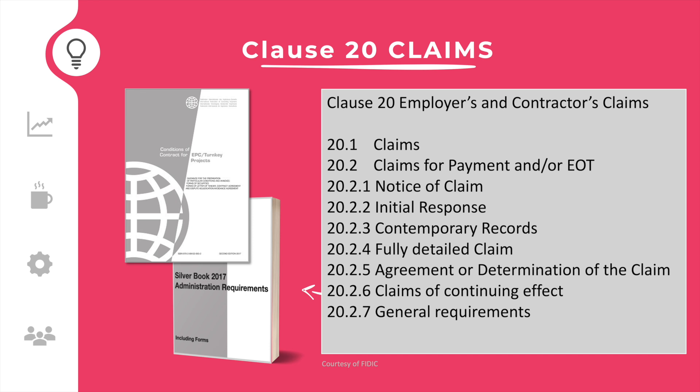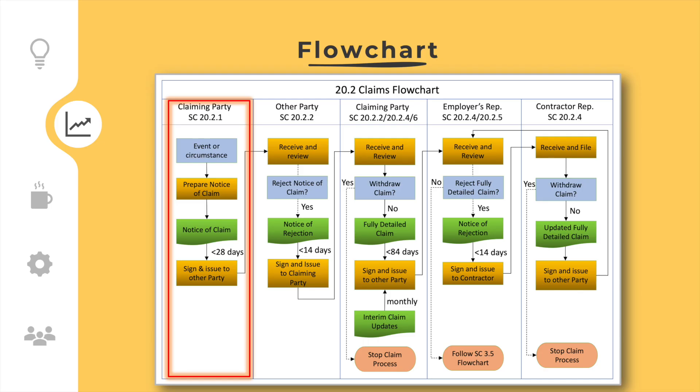Every contract should have administration requirements which include the forms to be used, reports to be made, and workflow charts which explain the process steps to take. The claiming party shall prepare a notice of claim which describes the claim event, reason for the claim, and the estimated effect on the schedule and contract price. The notice form shall be duly signed and sent to the other party within the applicable period.